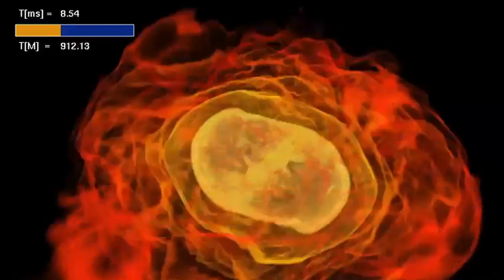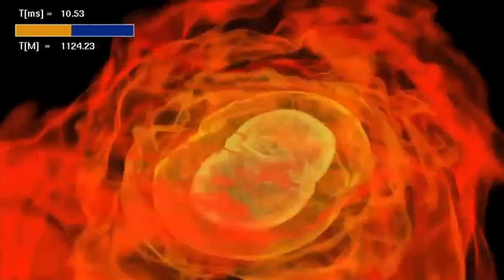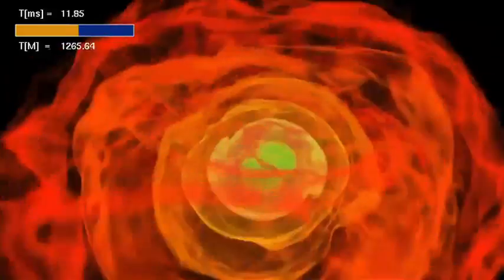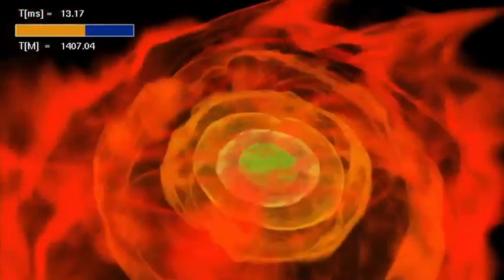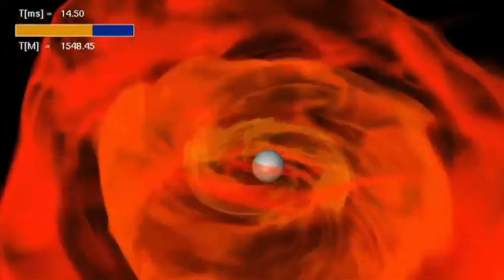Now, the simulations reveal the middle step of the process: how the merging star's magnetic field organizes itself into outwardly directed components capable of forming a jet.